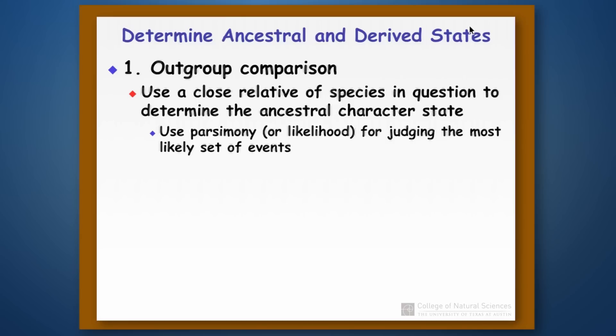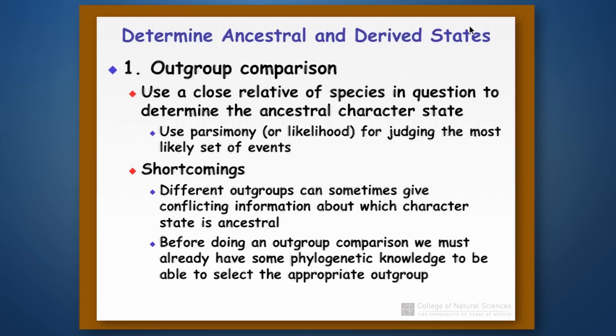This is just repeating what we just drew, so you can come back to this and look at it if you'd like. Now there are some shortcomings to outgroup comparisons. If you pick different outgroups, you could get conflicting information about which character state is ancestral. And the other thing is that before you can do an outgroup comparison, you actually have to know that something is outside of the group that you're working with — so in some sense, you're assuming a certain amount of phylogenetic knowledge beforehand.